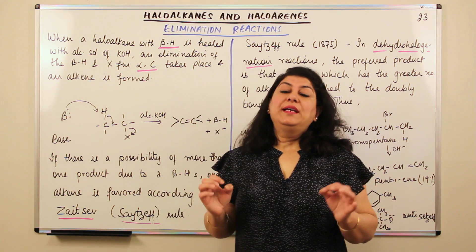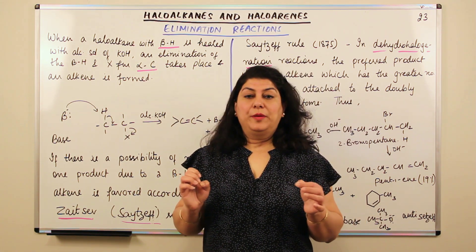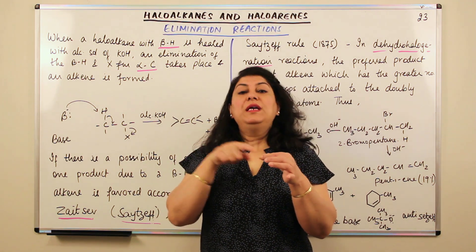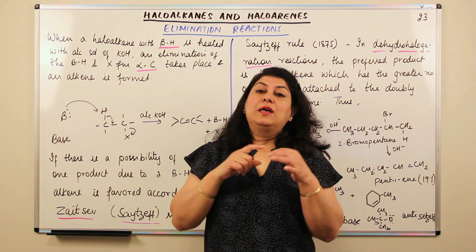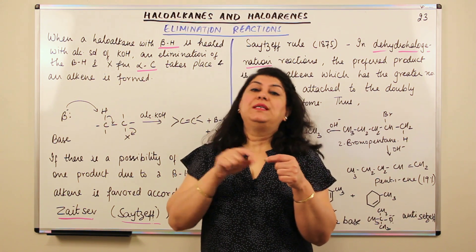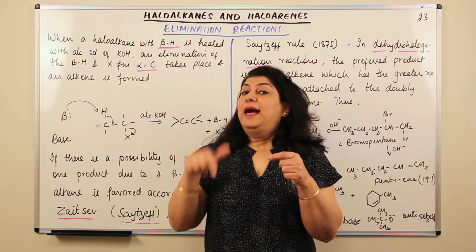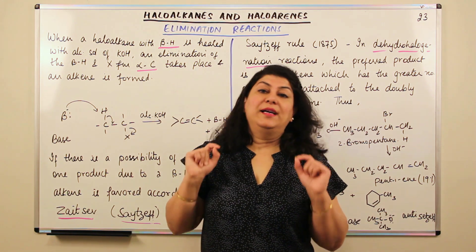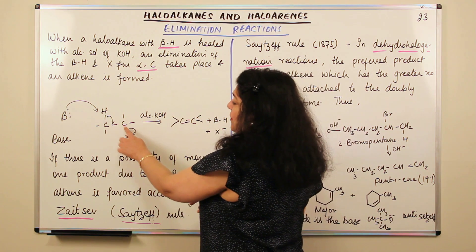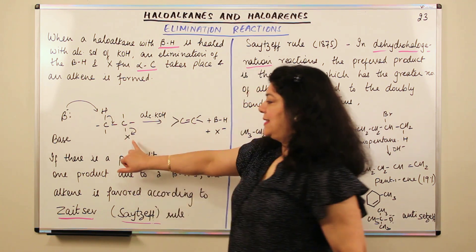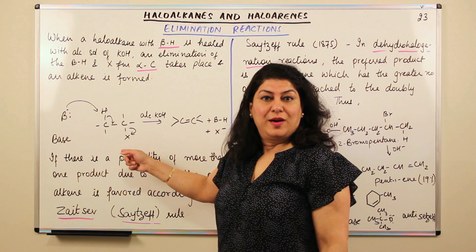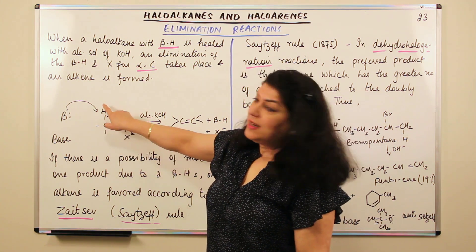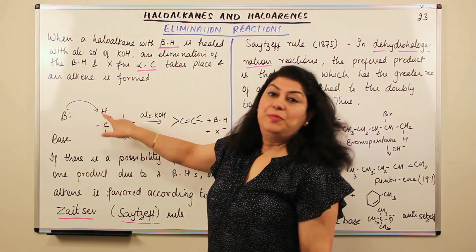Any carbon which is attached to the alpha carbon would be a beta carbon — the carbons adjacent to the alpha carbon are beta carbons. The hydrogen attached to a beta carbon is known as a beta hydrogen. For example, if halogen X is attached to a carbon, that is the alpha carbon. The carbon next to it is the beta carbon, and the hydrogen attached to the beta carbon is the beta hydrogen.